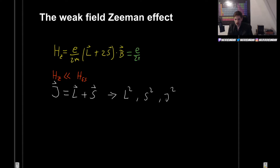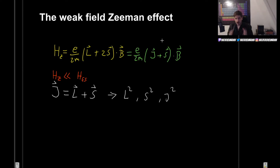We now have the factor e over 2m multiplied by J plus S. We have made progress, but we still have this annoying S, which is not a good state, so we need to get rid of it.